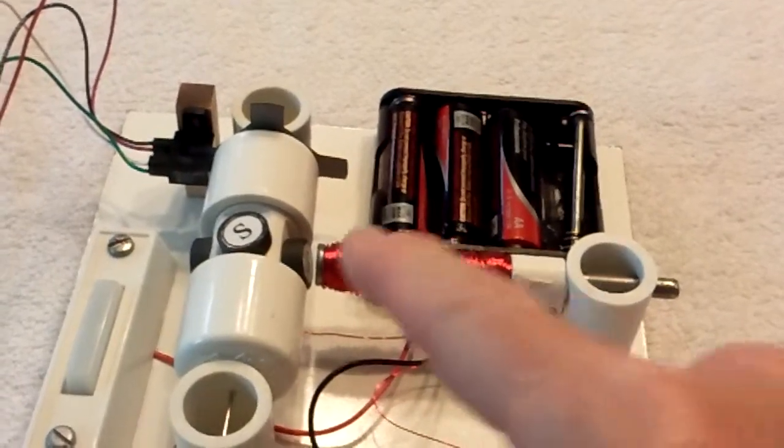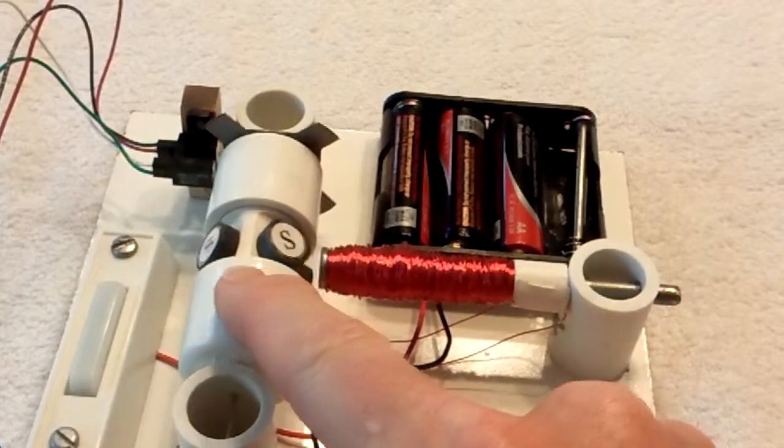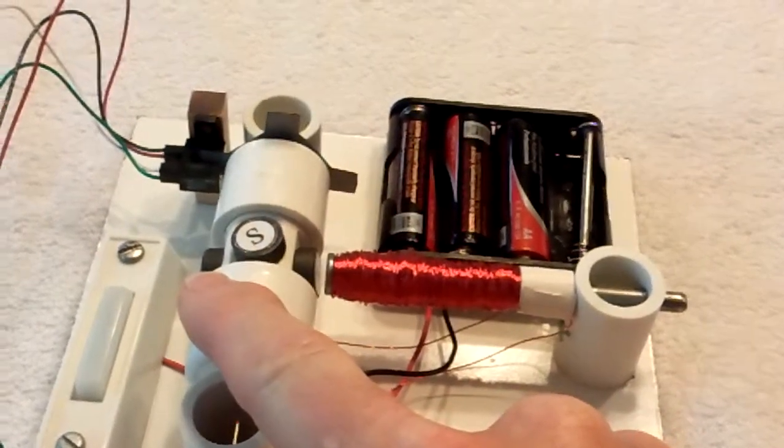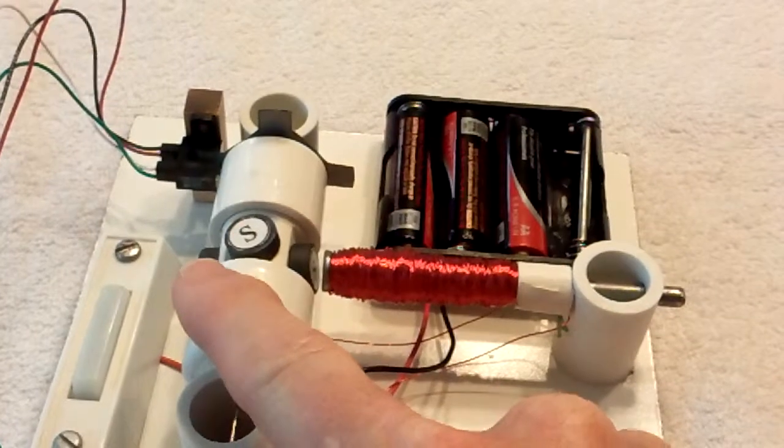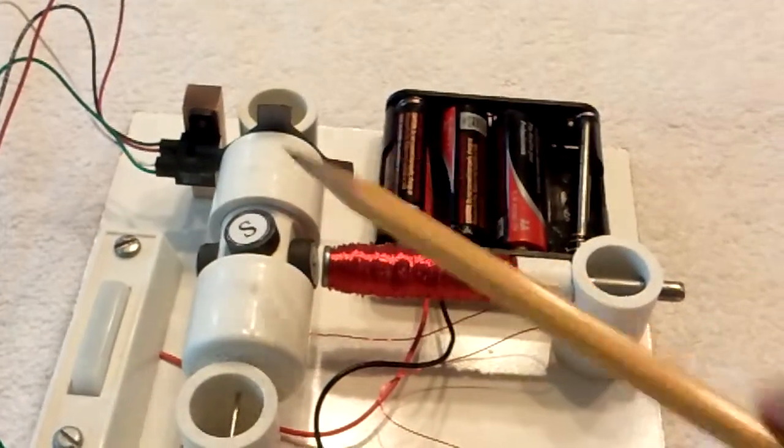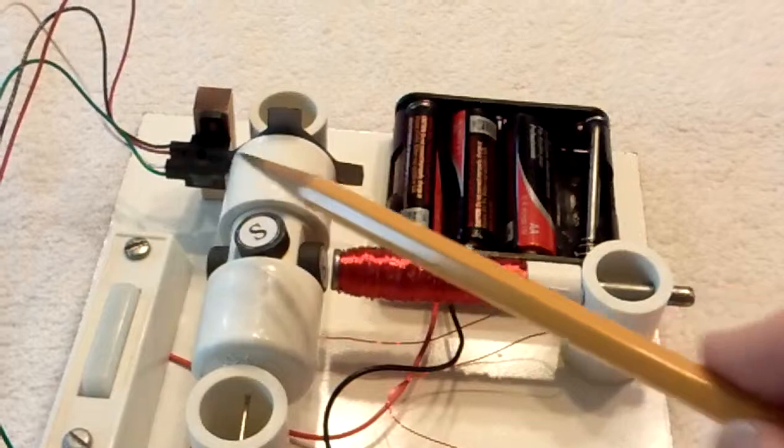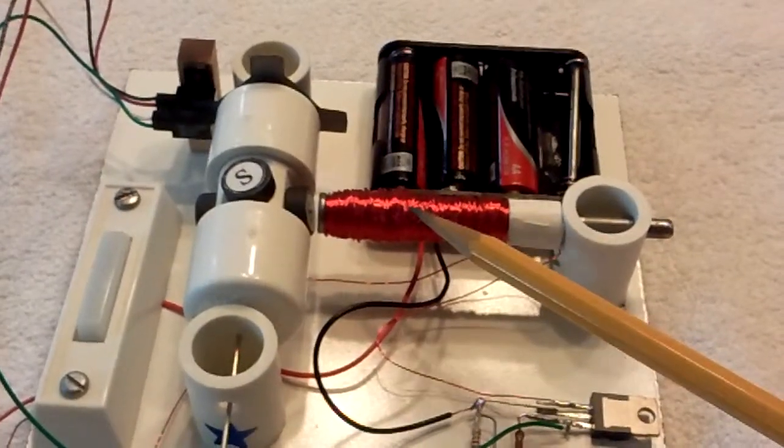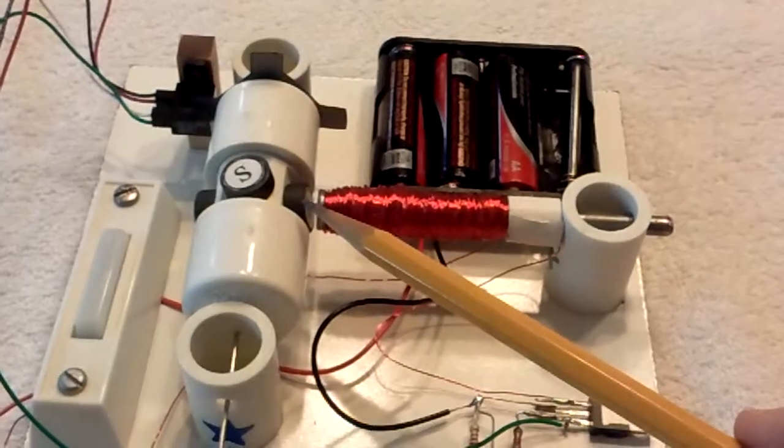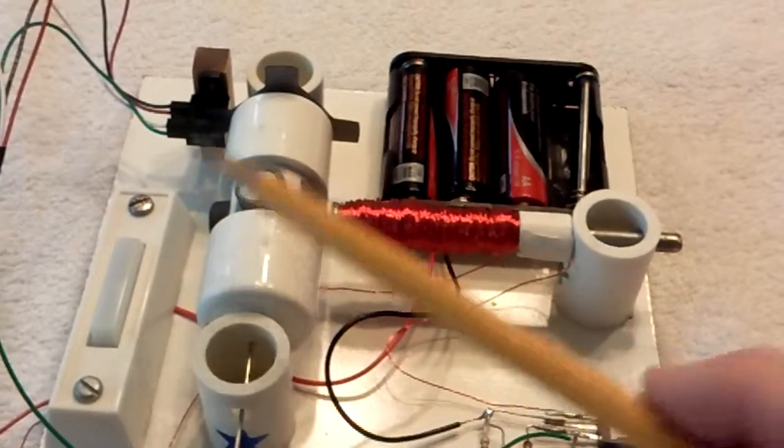Then, due to inertia, it goes to the next part, and the blade blacks out very quickly, blacks out between the LED and the phototransistor, and the Darlington kicks on the electromagnet, and that repels the permanent magnet, and it continues on around.